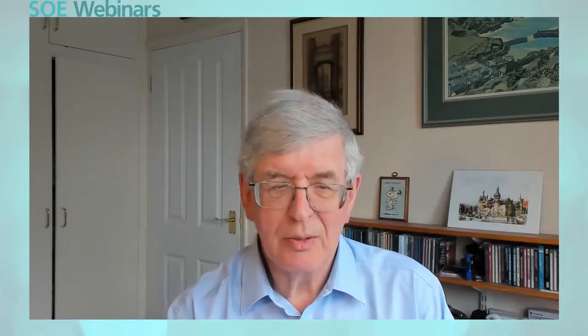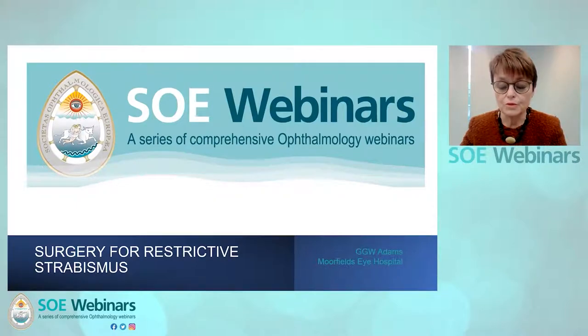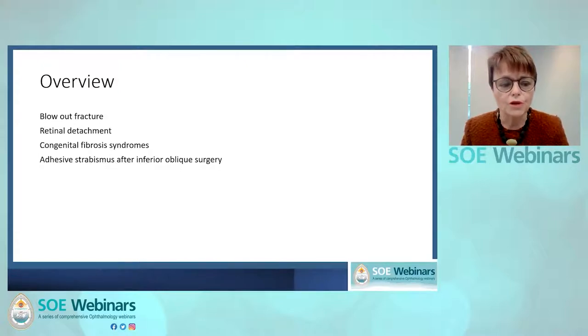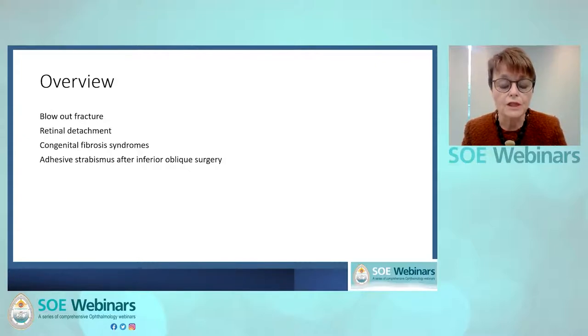It's my great pleasure to introduce Jill Adams, a longstanding colleague from Moorfields Eye Hospital. Jill is going to talk about surgery for restrictive strabismus, which can be very challenging. Hello, and thank you very much for asking me to talk. I'm Jill Adams from Moorfields Eye Hospital in London. I'm going to talk about restrictive strabismus — and most people commonly associate that with thyroid eye disease, which I'm not going to talk about. I'll discuss other areas where strabismus surgeons get involved and the techniques we can use to assist these often complicated problems.